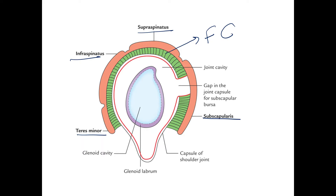Moving on to the nerve supply and actions of the scapular muscles: supraspinatus is mainly responsible for the initial abduction of the shoulder up to 15 degrees. Infraspinatus and teres minor are the lateral rotators of the shoulder. Teres major and subscapularis are responsible for adduction and medial rotation of the arm.